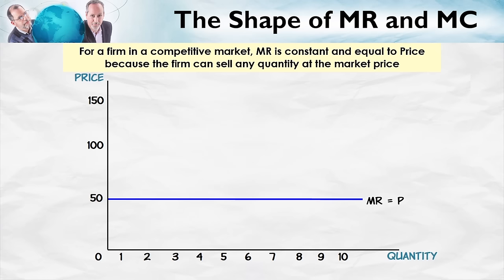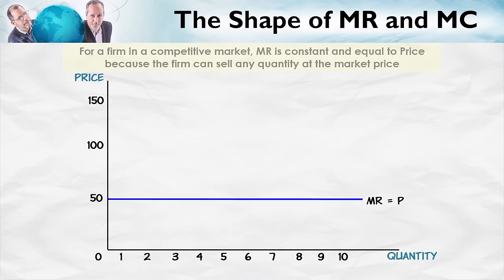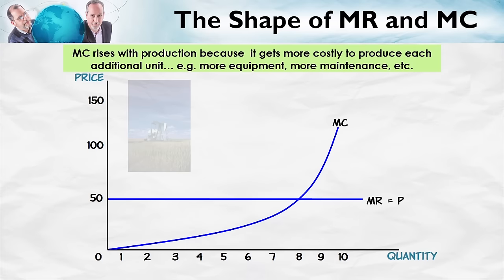Now what about marginal cost? A typical marginal cost curve is upward sloping. Think about our stripper oil well — we can produce more, but there's a limit. We can easily produce three or four units, but to produce six, seven, eight, or nine barrels, we have to run the well really quickly, use a lot of electricity, and do a lot of maintenance. Our additional costs rise the more we want to produce. So an upward-sloping marginal cost curve is the typical shape.